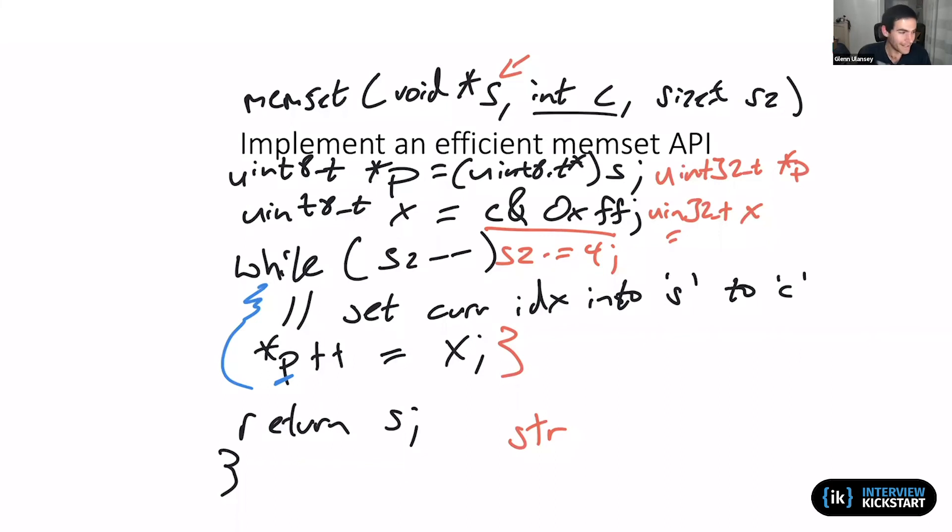Such that if s for example has initial address of one, our first iteration of this while loop is just going to write a single byte. The second iteration is going to write two bytes, and then from then on we can write four bytes at a time.